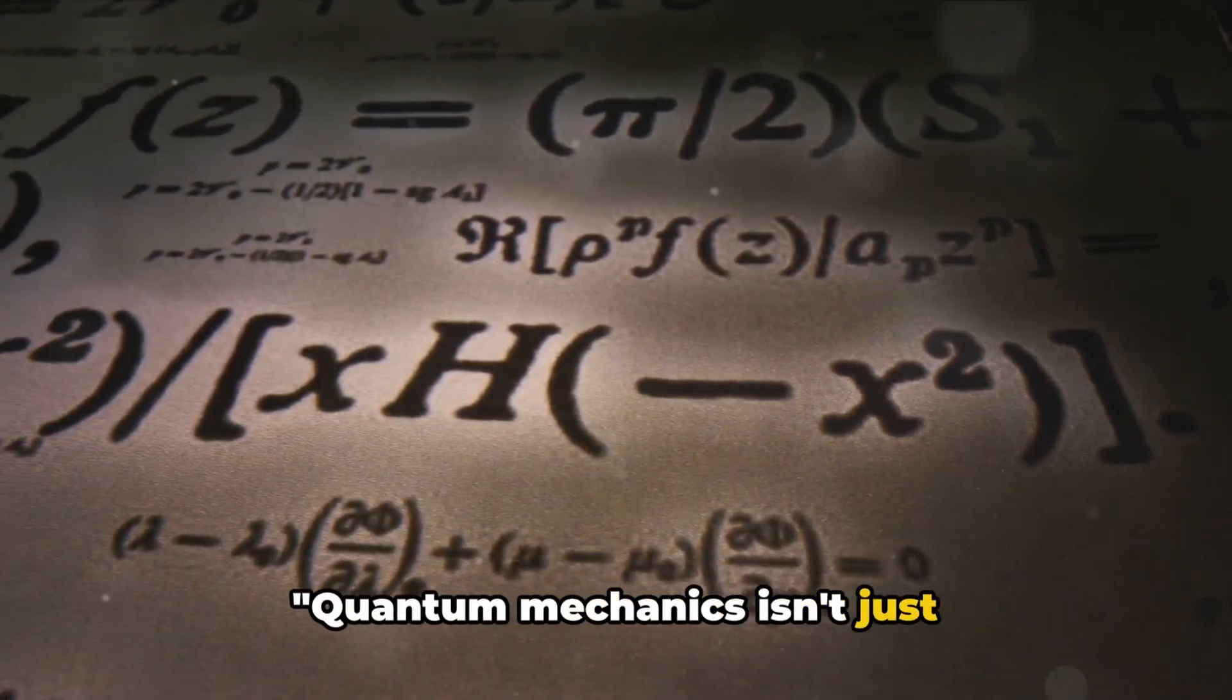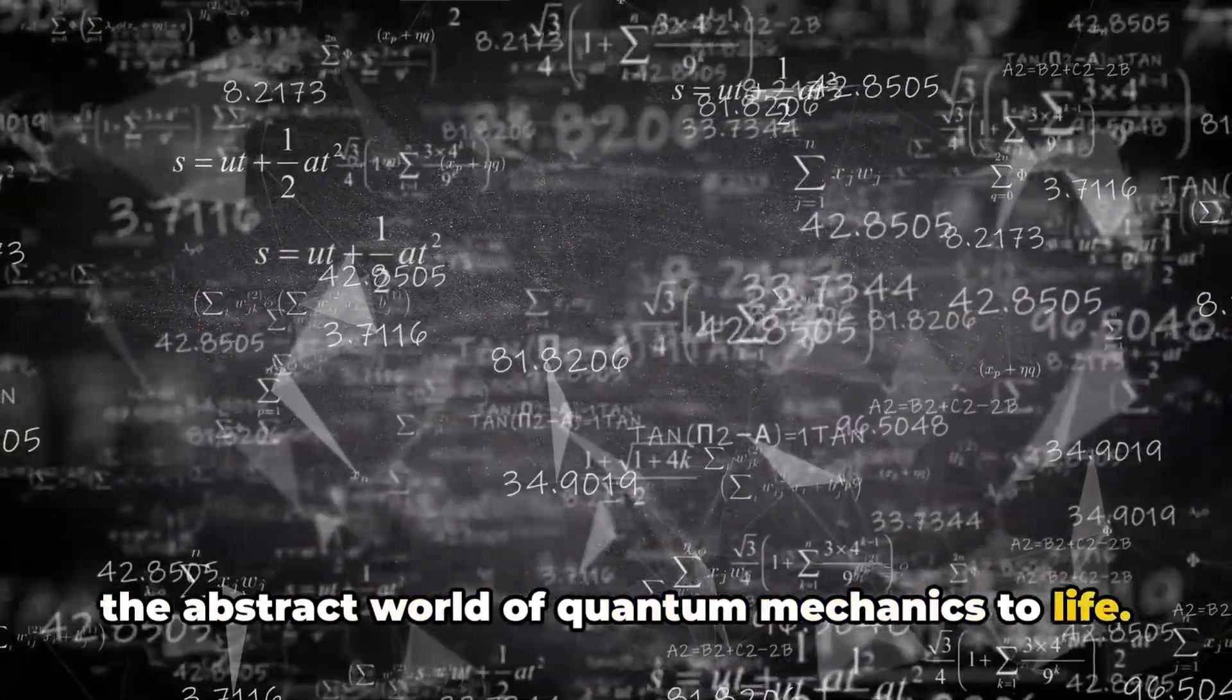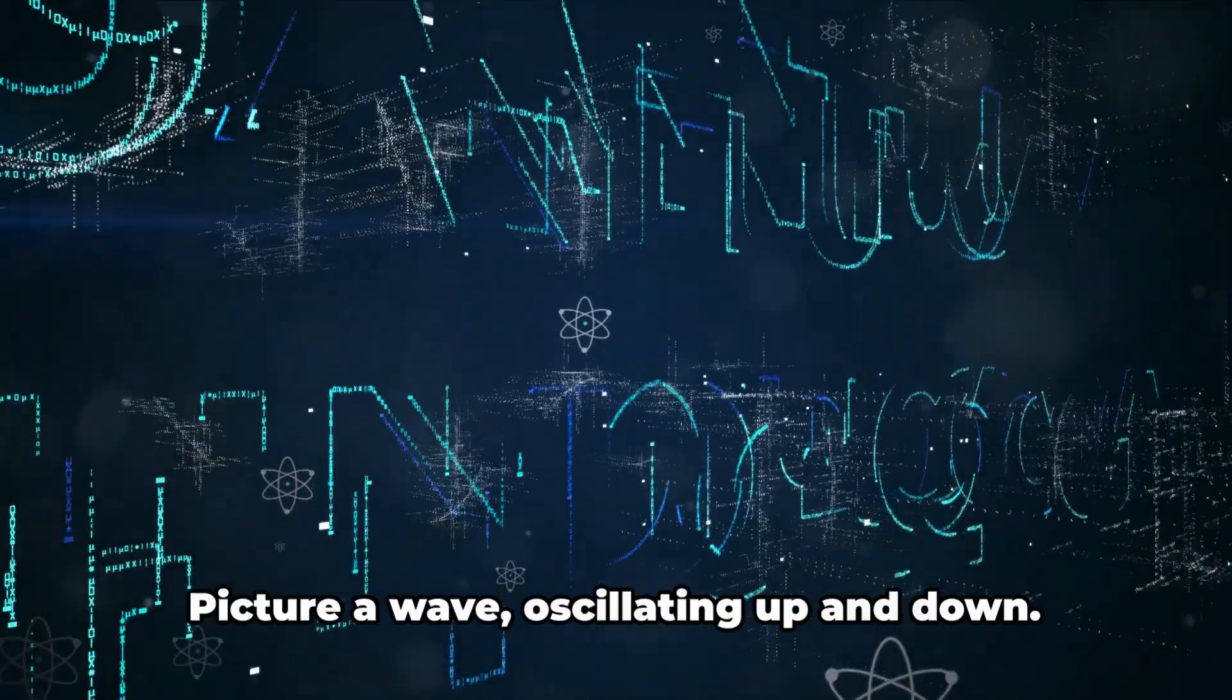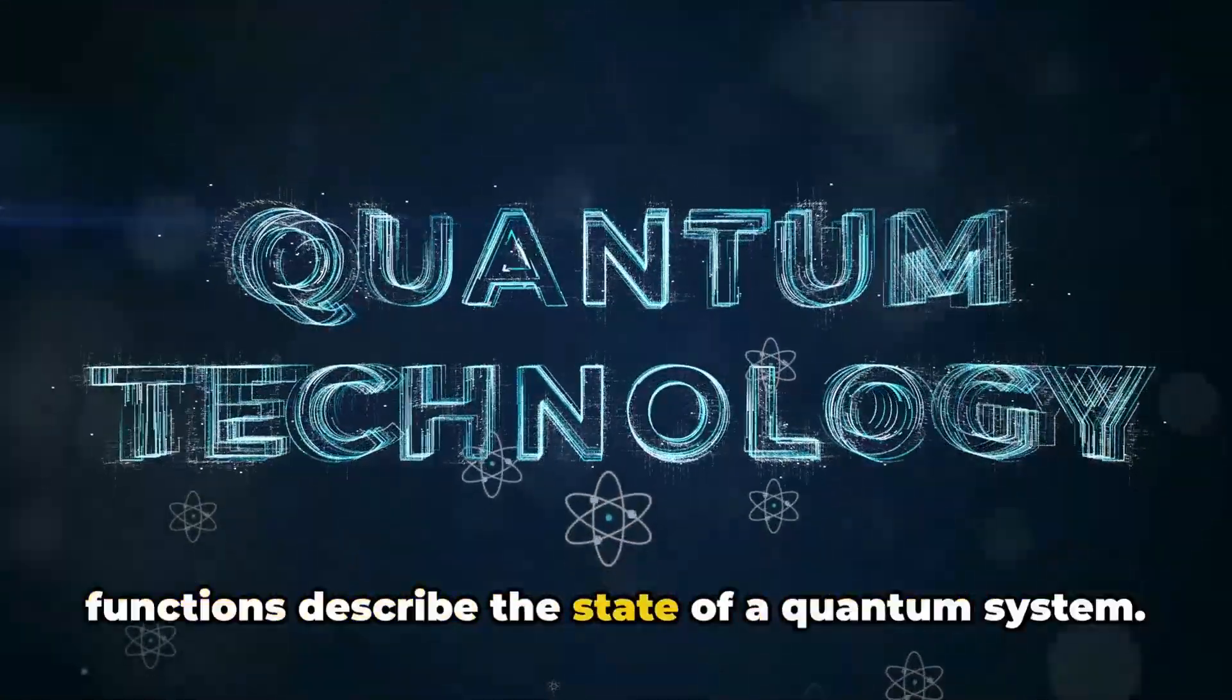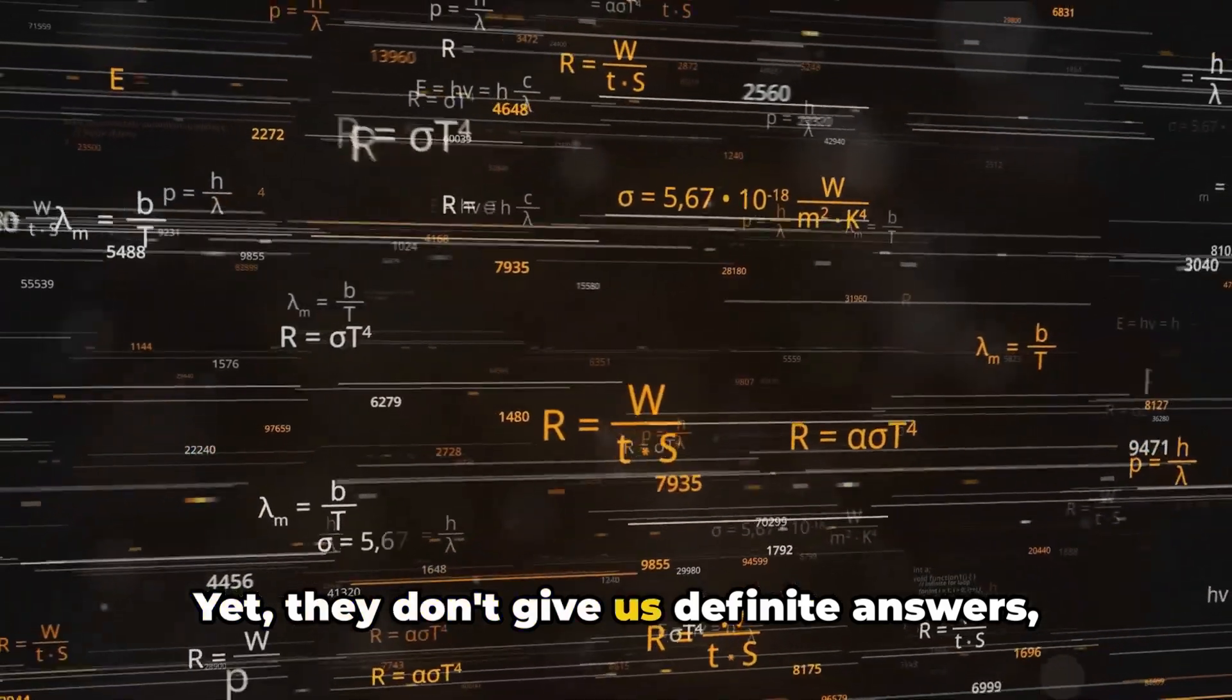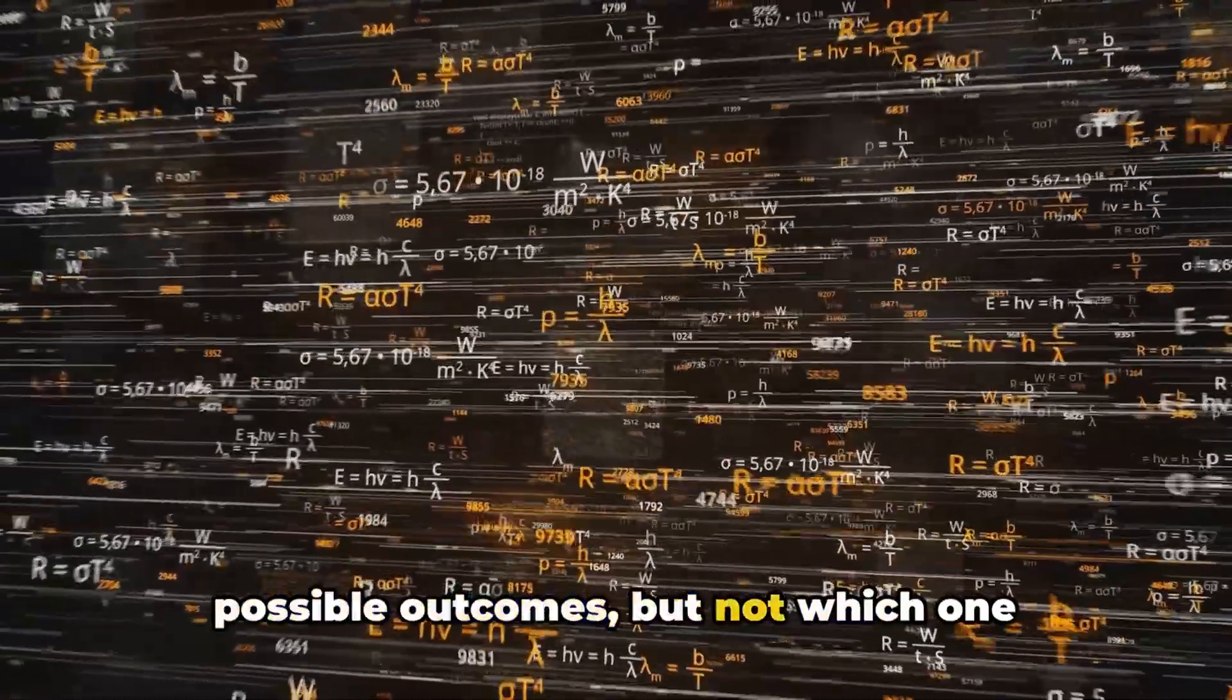Quantum mechanics isn't just philosophical musings, it's grounded in mathematical rigor. Mathematics is the language that brings the abstract world of quantum mechanics to life. First off, we have wave functions. Picture a wave, oscillating up and down. In quantum mechanics, these wave functions describe the state of a quantum system. They're a bit like a recipe containing all the ingredients or information about a quantum particle's properties. Yet, they don't give us definite answers, only probabilities. You might think of pulling a card from a well-shuffled deck. You know all the possible outcomes, but not which one you'll get.